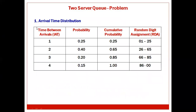The difference between single server and two-server queue is that in a single server, only one server is there and the next service starts only after the current one ends. Whereas now two servers are there, so they can work simultaneously according to the arrival time. We will now need to create the tables.